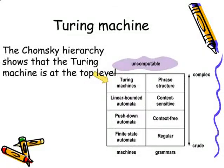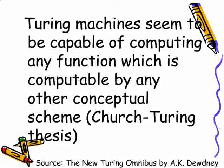The Turing machine is a very abstract symbol-manipulating device which can be adapted to simulate the logic of any other computer algorithm. A Turing machine seems to be capable of computing any function which is computable by any other conceptual scheme.